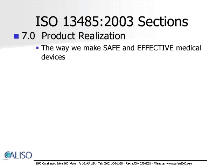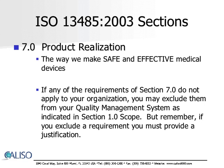Last but definitely not least, calibration requirements are included in this section. If any of the requirements of section 7.0 do not apply to your organization, you may exclude them from your quality management system as indicated in section 1.0 of the scope. But remember, if you exclude a requirement, you must provide a justification.